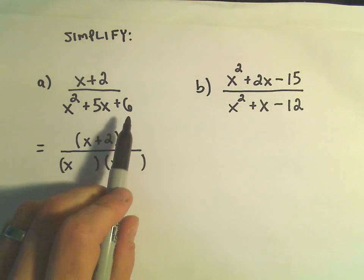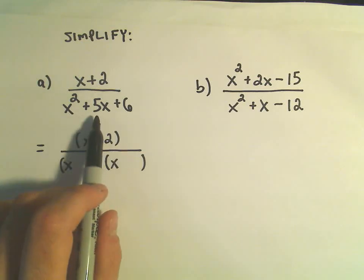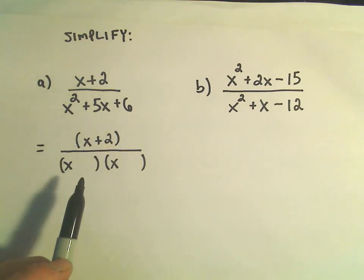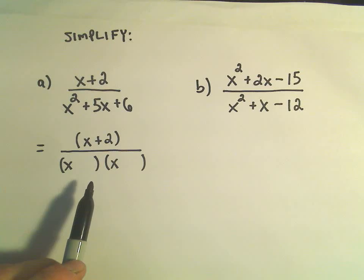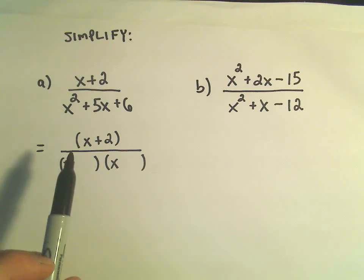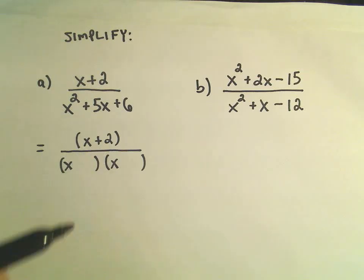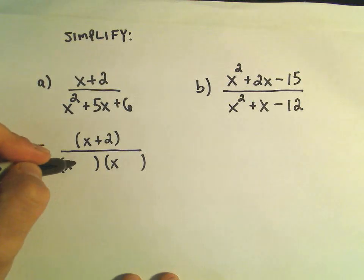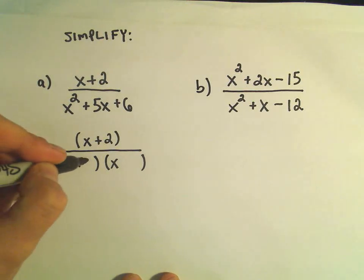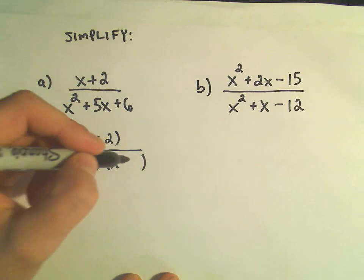I think, would two numbers multiply to positive 6 but add up to positive 5? If I saw this on a homework or quiz or test I would think, well, if they want me to cancel there must be an x plus 2 somewhere on the bottom if anything is going to cancel. So that's kind of the first thing I think about.